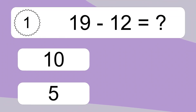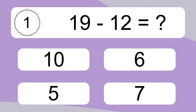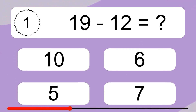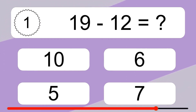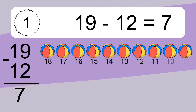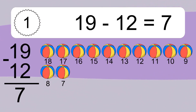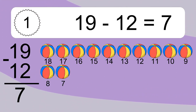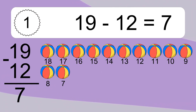19 minus 12 equals what? 19 minus 12 equals 7. Let's count it. 18, 17, 16, 15, 14, 13, 12, 11, 10, 9, 8, 7.